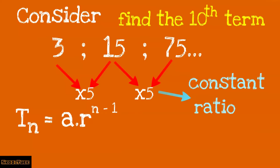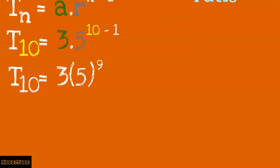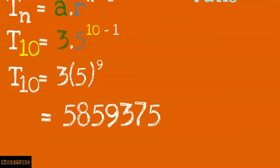We know that Tn equals a multiplied by r exponent n minus 1, where a is 3 and r is 5. Therefore, T10 equals 3 multiplied by 5 exponent 9. Term number 10 is 5,850,9,375.